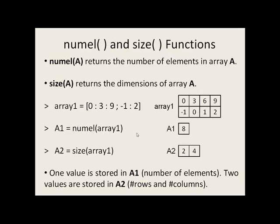The numel function returns the number of elements in an array. The size function will give us the dimensions of an array. Using array1 here, the number of elements is 8. If we say numel of array1, we will get back the value 8, a single value. If we say size of array1, we'll get back two values, a 1 by 2 array, with the values 2 for the number of rows and 4 for the number of columns.